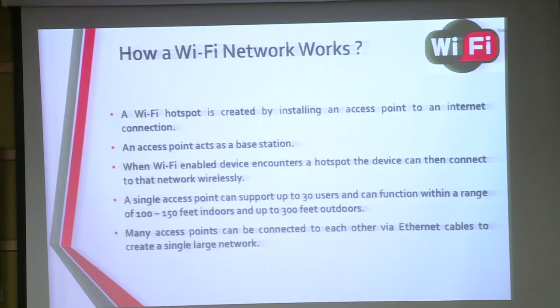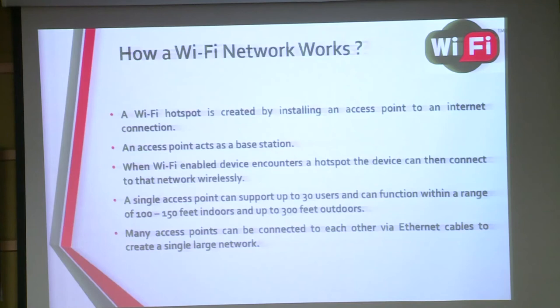A Wi-Fi hotspot is created by installing an access point connected to an internet connection. The access point can act as a base station. When a Wi-Fi enabled device encounters the hotspot, the device can be connected to that network wirelessly. For example, if this mobile is receiving internet from 2G or 3G, by using hotspot software, this mobile becomes a Wi-Fi hotspot, and the rest of the wireless devices can connect to it via this access point.